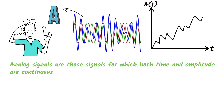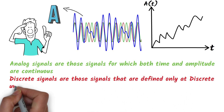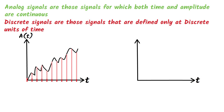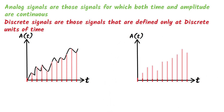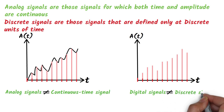Another form of signals is discrete signals, which are defined only at discrete units of time. To obtain discrete signals, we sample the analog signals at discrete units of time. Many people often confuse analog signals with continuous time signals, but analog signals and continuous time signals are not the same. Similarly, discrete signals and digital signals are not the same. The true name of this course should be discrete signal processing, as we are dealing only with discrete signals throughout the course. However, since universities around the world name it digital signal processing, we use the same name.